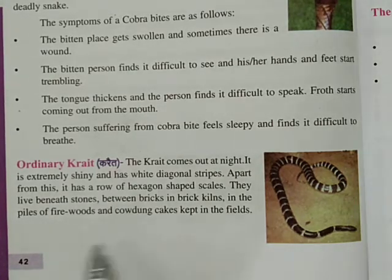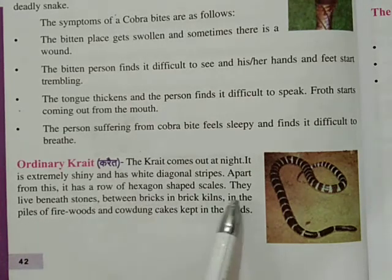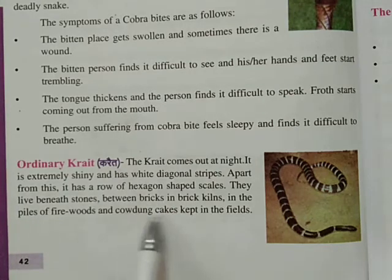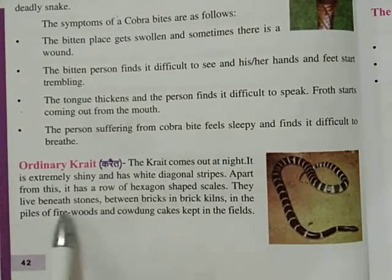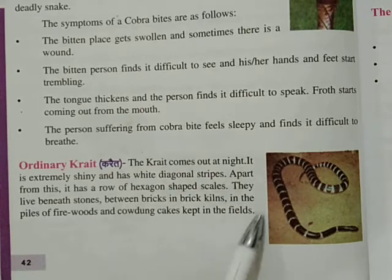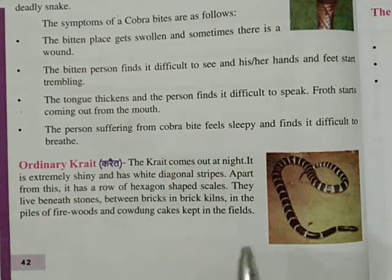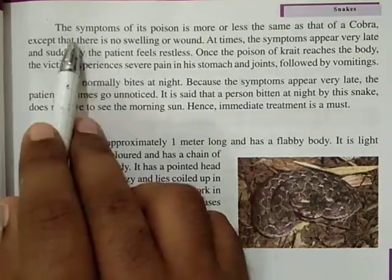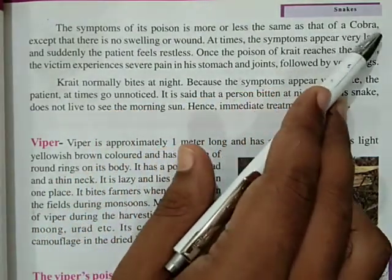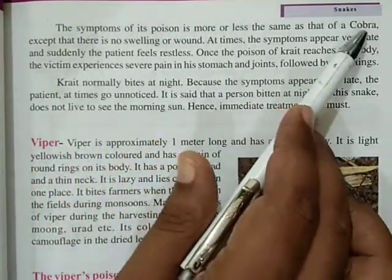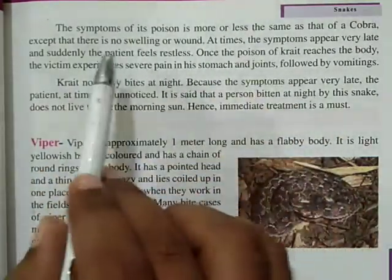Jadatar case mein kahan par paya jaata hai — dhyan rakhna: hamesha patharon ke niche, jahan par hum eet rakhte hote hain, eet ke beech beech mein, kahi baar jahan par hum lakdiyan rakhte hote hain, ya jahan par cow dung kandhe sukha ke rakhte hain — in sabhi jagahon par jane se pehle satark rehna chahiye. The symptoms of its poison are more or less the same as that of a cobra — lugbhag cobra jaisa hi symptoms iska bhi dekhne ko milta hai.